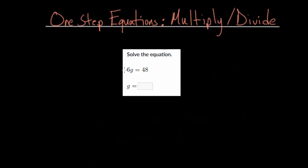And remember that when you see a number and a letter next to each other, we assume that they're multiplying together. So this is 6 times g gives us 48, and we need to figure out what g would be.